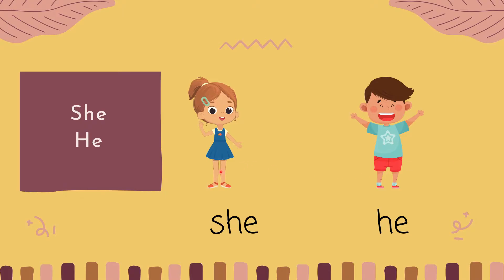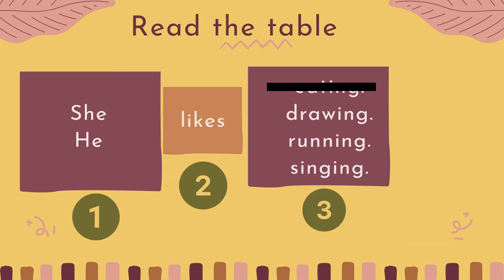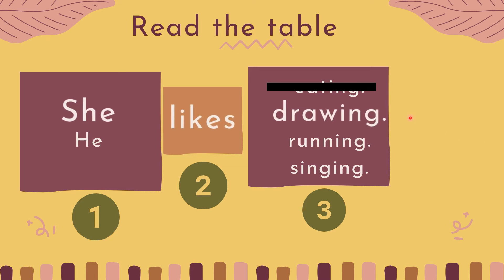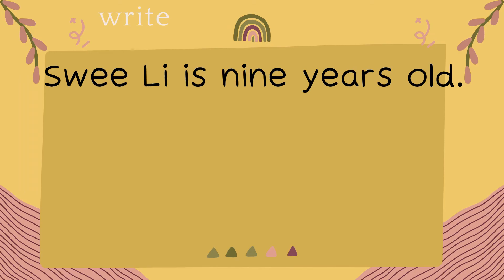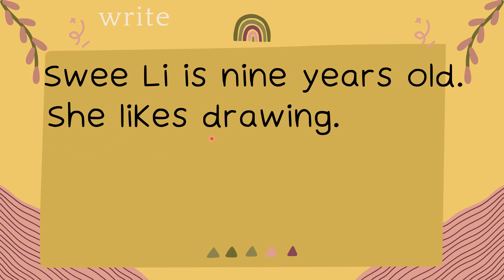Before we start: 'she' untuk perempuan — girl; 'he' is for boy — lelaki. Swilly is a girl, so we use 'she likes drawing.' Ambil yang kedua, salin semula: She likes drawing.